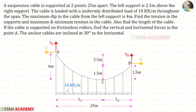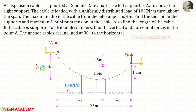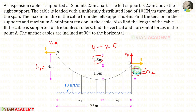The maximum dip in the cable from the left support is 4 meters. We know that the maximum dip from point A is the vertical distance to the lowest point C, which is h1 = 4 meters. Therefore h2 = h1 minus 2.5, giving us h2 = 1.5 meters.